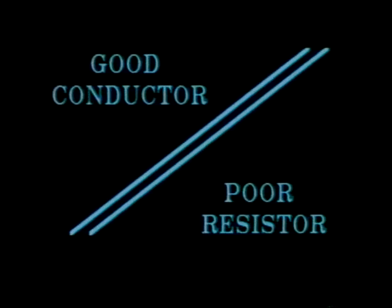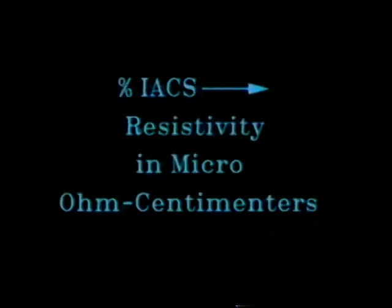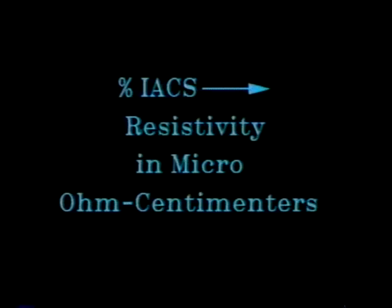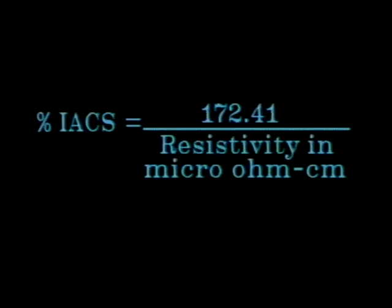The symbol for conductivity is sigma and the unit is percent IACS, or percent of the International Annealed Copper Standard. Conductance and resistance are direct reciprocals, meaning that a good conductor is a poor resistor. But conductivity and resistivity have different origins and units, so the conversion is not so direct. The arbitrary scale for conductivity expressed in percent IACS can be converted to resistivity, expressed in absolute terms of micro ohm centimeters. To convert to either unit, we follow the equation: percent IACS equals 172.41 over the resistivity in micro ohm centimeters.